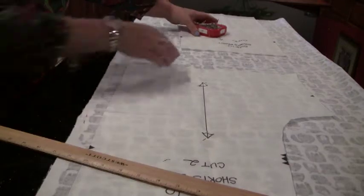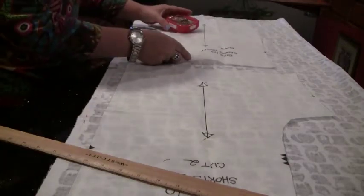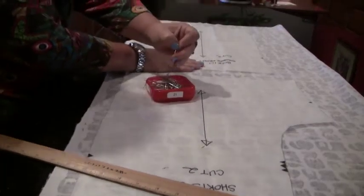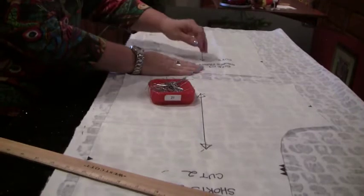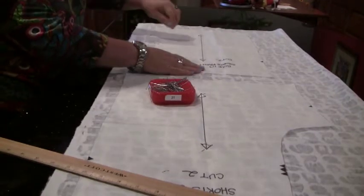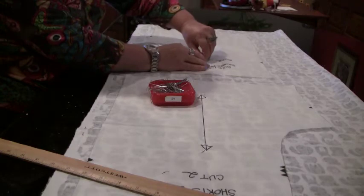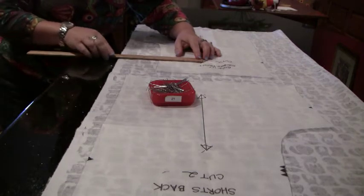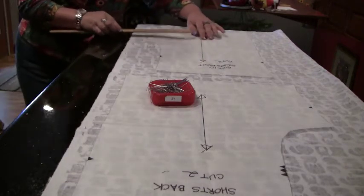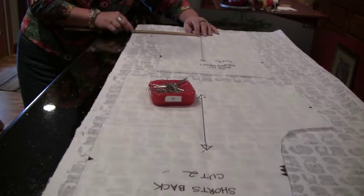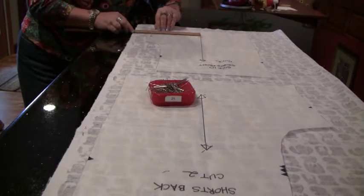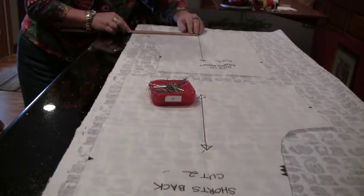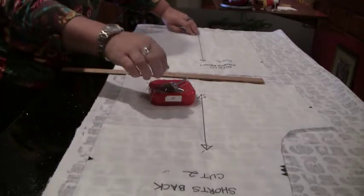Once you're finished with that, you would go ahead and do the same thing with the front pattern. Now, the only thing that you have to make sure is that these two arrows are the same. They do not have to be the same measurement to the selvage as the back pattern. So now again, I will go ahead and measure. This one's eight and a half, so then this measurement down here needs to be eight and a half. Now, I need to pivot my pattern just a little bit more, and then pin it down.